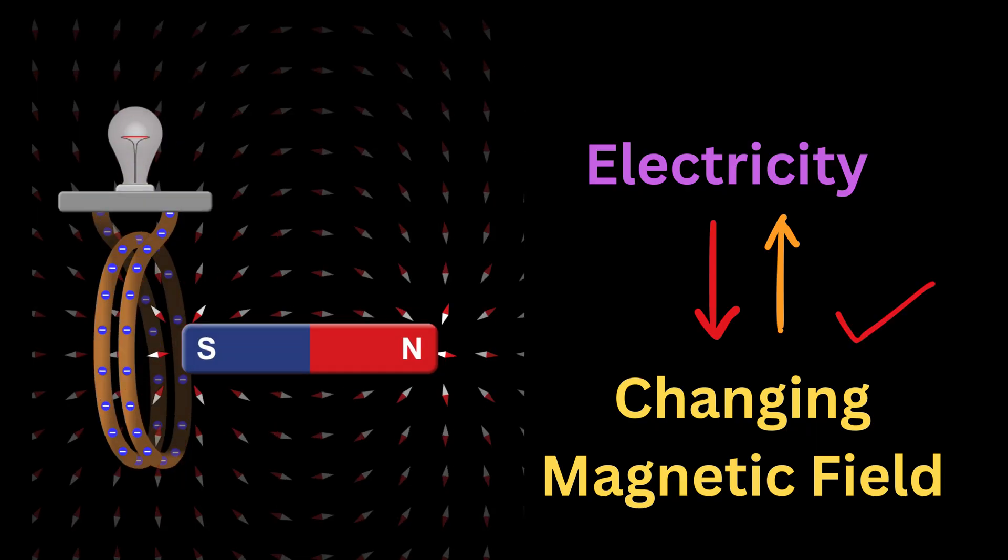This was the key. A changing magnetic field could generate current through the wire, which meant magnetism really could create electricity, but only when it changed.